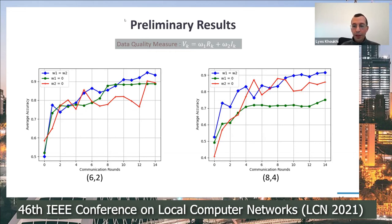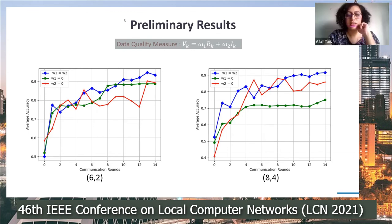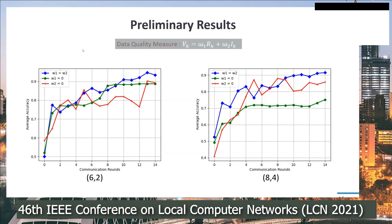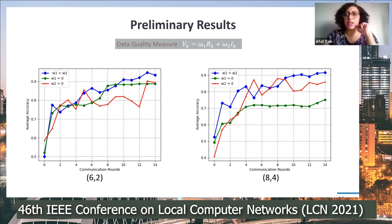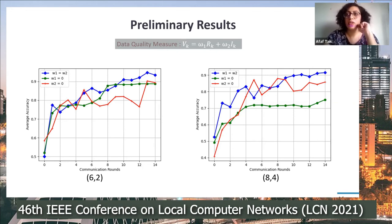Gurkan asked a question about the dataset selection: what were the motivations for choosing MNIST, and do you see this kind of dataset used in real applications? MNIST is the most widely used dataset in federated learning simulations, and it is accessible to everyone, so we wanted everyone to be able to compare, verify, and replicate our results. Since the first federated learning paper, advancements have been evaluated using MNIST and CIFAR.